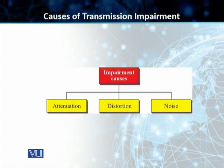Transmission impairments have different causes, but there are three major causes. The first one is attenuation. The second one is distortion. And the third one is noise.